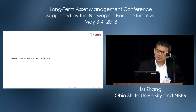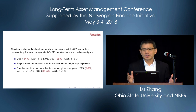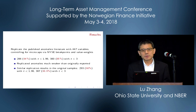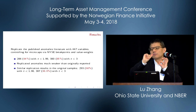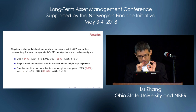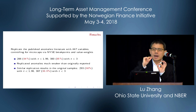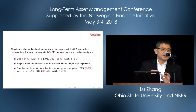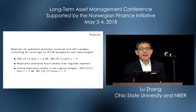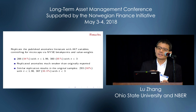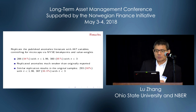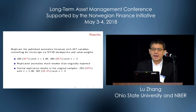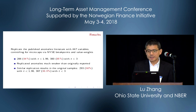We're trying to make the point in this paper that most anomalies in the cross-section fail to replicate. We replicate the bulk of the published anomalies literature with 447 variables in total. We control for microcaps by using NYSE breakpoints and value-weighted returns. For each of the 447 anomaly variables, we form deciles using NYSE breakpoints and calculate value-weighted portfolio returns, then compute high minus low average return. If that average return is significant at the traditional T cutoff of 1.96, we view that as a replication success; otherwise it's a replication failure. In total, 286 out of 447 anomalies fail to replicate, or 64%.